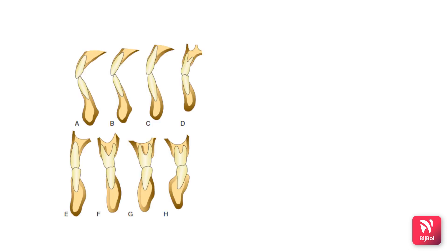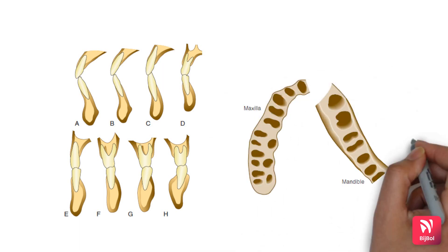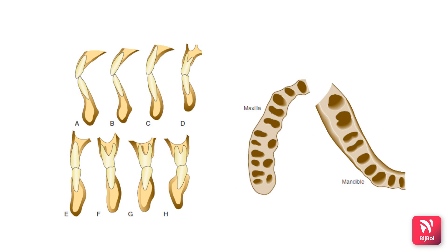The next picture shows the relative proportions of cancellous bone and compact bone in a longitudinal facial-lingual section. Most of the facial and lingual portions of the sockets are formed by compact bone, whereas cancellous bone surrounds the lamina dura. Another picture shows the shapes of the roots and surrounding bone distribution in the transverse section of the maxilla and mandible, where you can appreciate the bone distribution around each tooth.